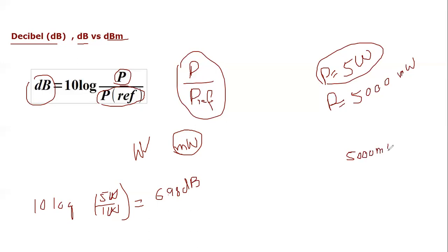If I'm going to use the same formula, 5000 milliwatt divided by reference power 1 milliwatt so that these units can be cancelled. Last time the reference unit was 1 watt, and this time the reference unit is 1 milliwatt. You apply the same formula 10 log. Once you evaluate the values, it will become around 36.98.